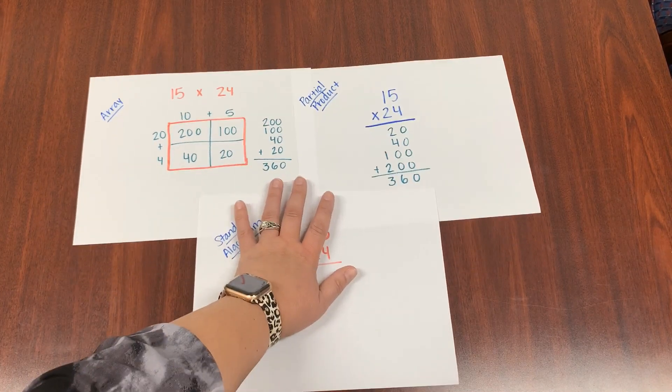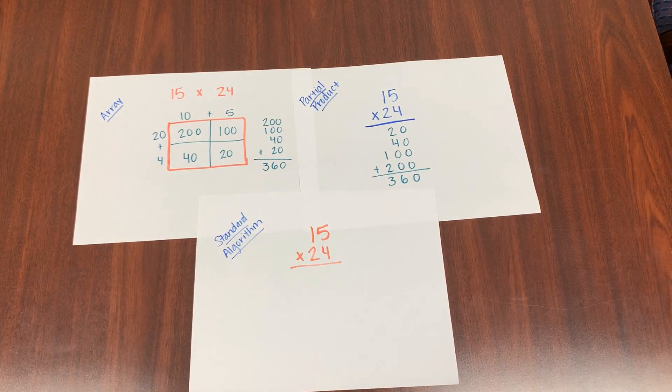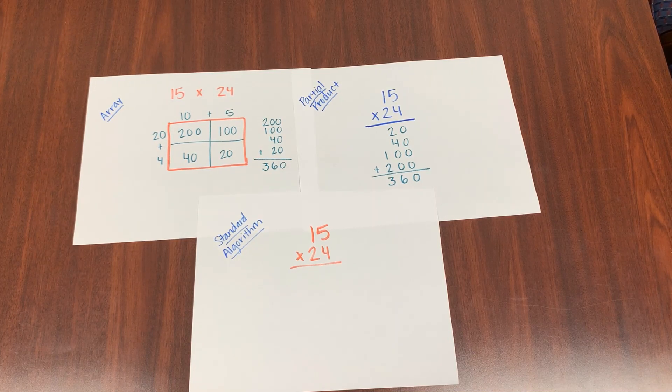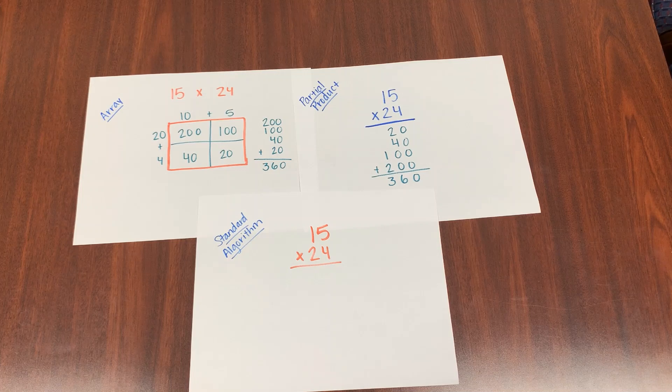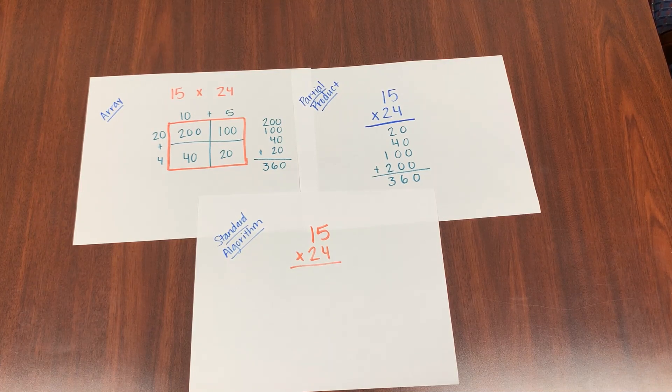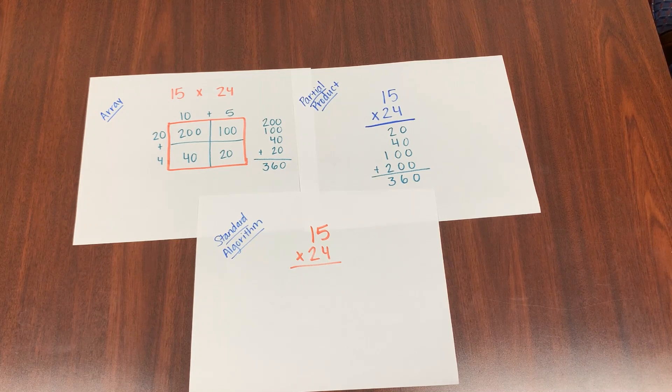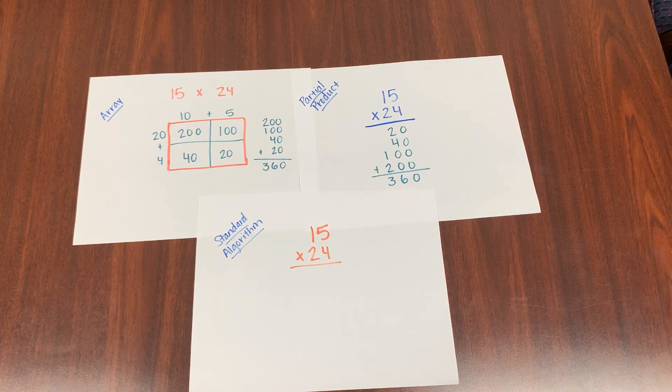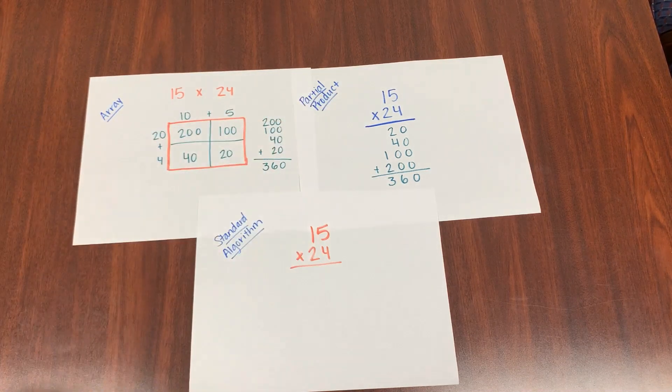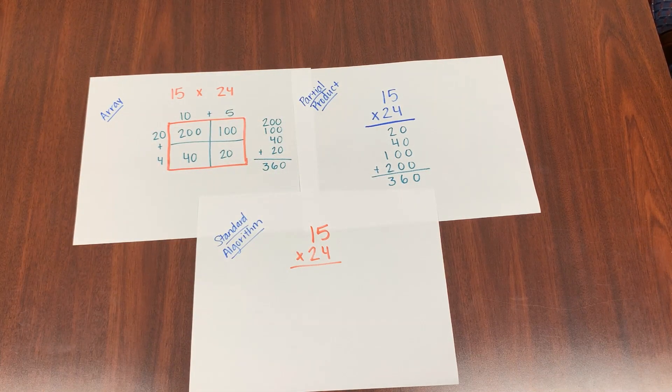So what if we wanted to do this with the standard algorithm? Now this one's a little bit different because it has two digit by two digit. So there's going to be a little extra step here with this version. As I am going along and solving this problem, if you can relate it to the array and the partial product, can you see any similarities?